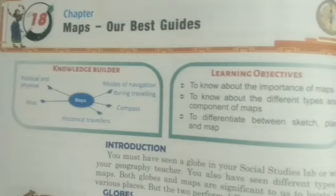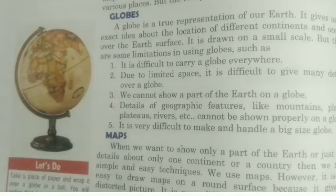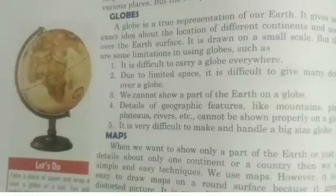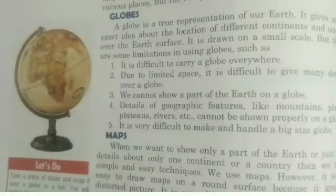A globe is a true representation of our Earth. It is drawn on a small scale, but there are some limitations in using a globe: it is difficult to carry a globe everywhere, and due to limited space it is difficult to give many details over a globe. We cannot show just a part of the Earth on a globe.